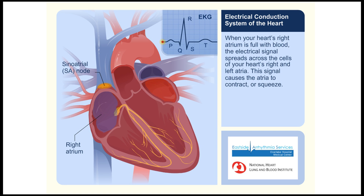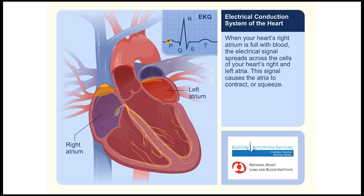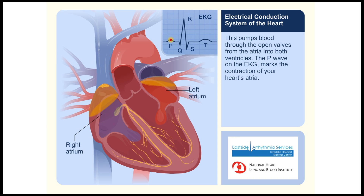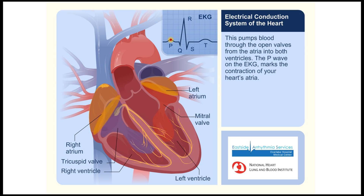When your heart's right atrium is full with blood, the electrical signal spreads across the cells of your heart's right and left atria. This signal causes the atria to contract or squeeze, pumping blood through the open valves from the atria into both ventricles. The P wave on the EKG marks the contraction of your heart's atria.